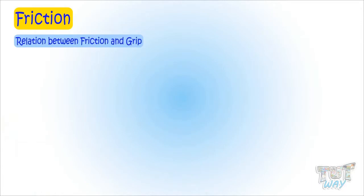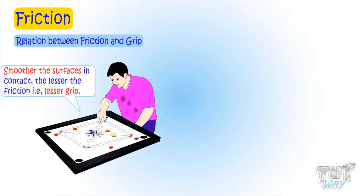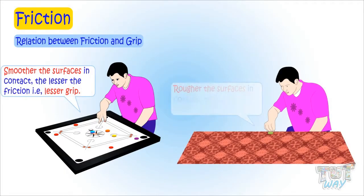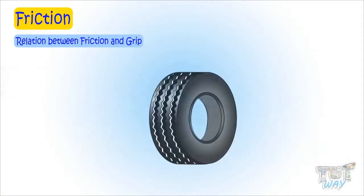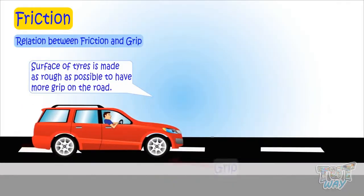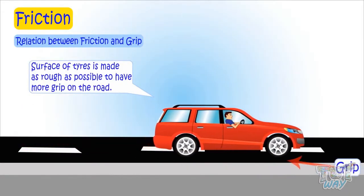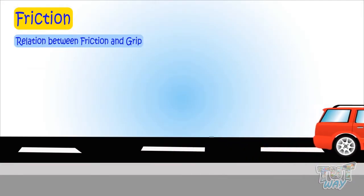Now let's see the relationship between friction and grip. The smoother the surface in contact, the lesser the friction — the surfaces will not stay in contact and will slip off, meaning there is no grip. The rougher the surface, the two objects will have better contact. So friction does not let two surfaces slide past each other and creates grip. This is why the surface of tires is made as rough as possible to have more grip on the road — otherwise tires will skid or slip off the road.